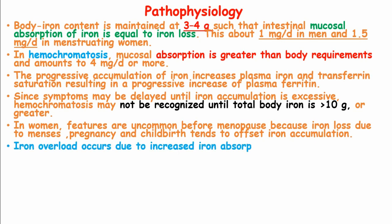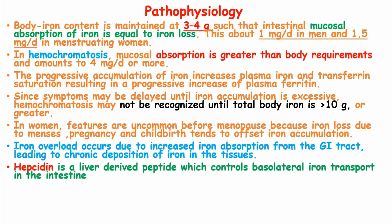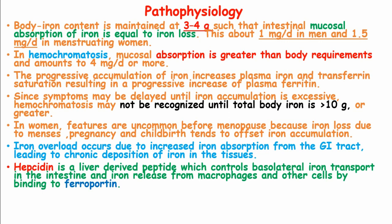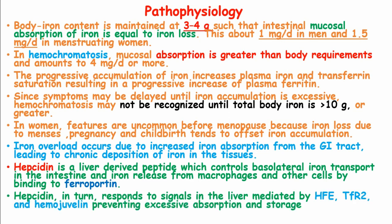Iron overload occurs due to increased iron absorption from the gastrointestinal tract, leading to chronic deposition of iron in the tissues. Hepcidin is a liver-derived peptide which controls basolateral iron transport in the intestines and iron released from macrophages and other cells by binding to ferroportin. Hepcidin, in turn, responds to signals of the liver mediated by HFE, TFR2, and hemojuvelin, preventing excessive absorption and storage.